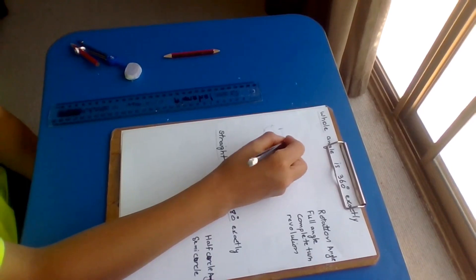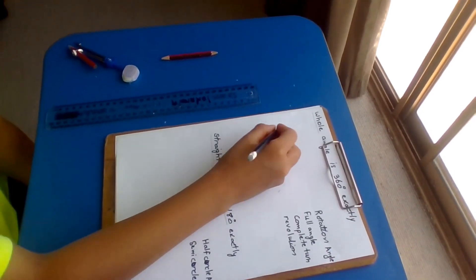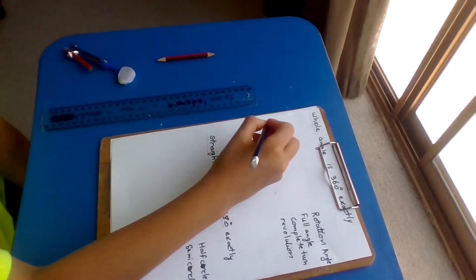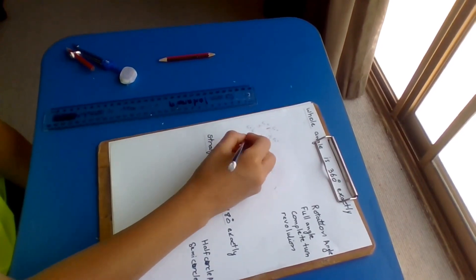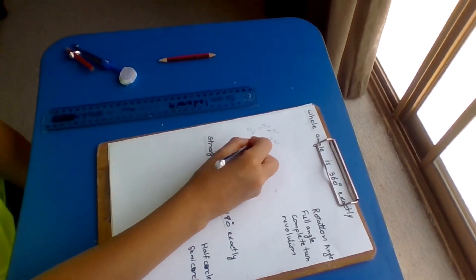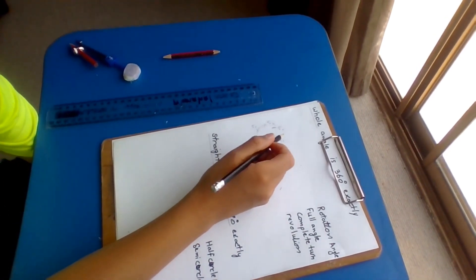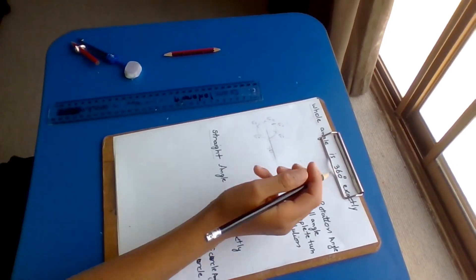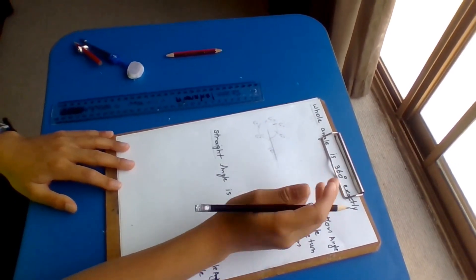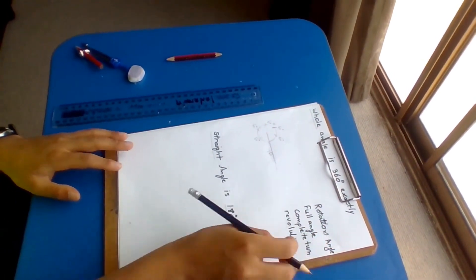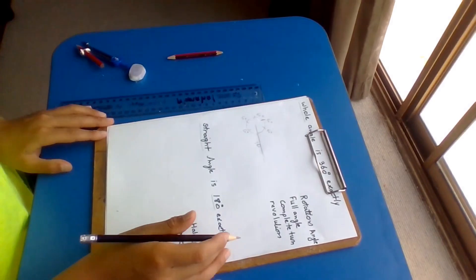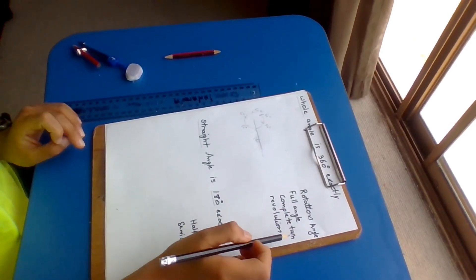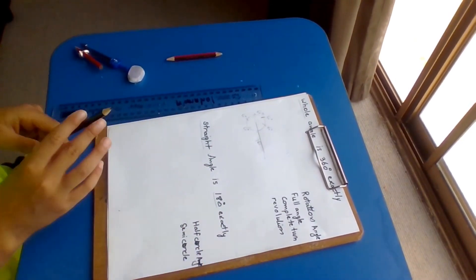This is 60 degrees. 60 degrees. 60 times 6 equals 360 degrees. You can even call it by different names like rotation, angle, full angle, complete turn, or revolution.